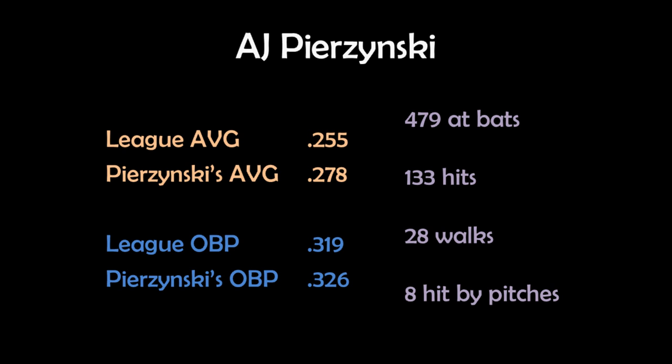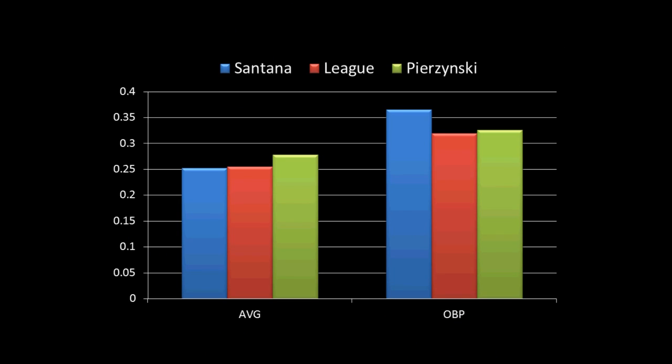So to compare, Pierzynski had a better average in 2012, but that is only telling us what he did as far as getting hits. Of course, you want to have guys on your team who have lots of hits, and I'm not saying Pierzynski isn't a good player, because he is. But some would argue that getting hits is not as important as not getting out, regardless of how you do it. So that is why some people would argue that on-base percentage is a better description of a player's true value at the plate than batting average is.